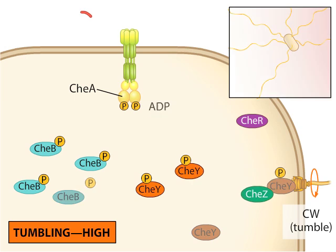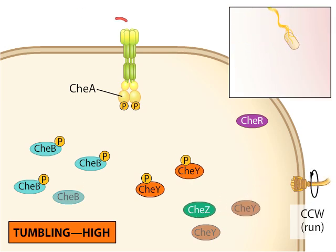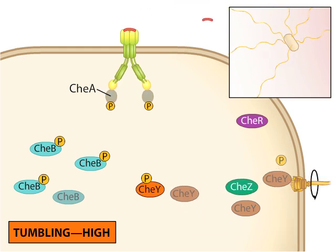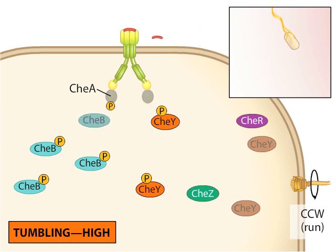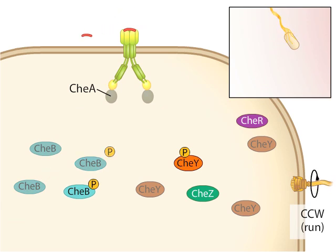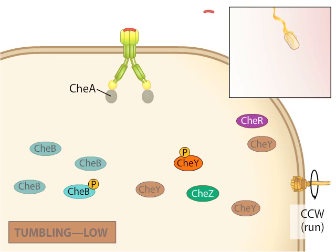If attractant is added to the environment, the attractant binds to the receptor, causing the inactivation of the bound CheA proteins. CheA gives its residual phosphate groups to CheB and CheY. However, after a while, CheB and CheY lose their phosphate groups and become inactive, and they no longer have CheA available to phosphorylate them again. With fewer phosphorylated CheY proteins, the cell tumbles less often, swimming straight ahead while sensing the chemical attractant.